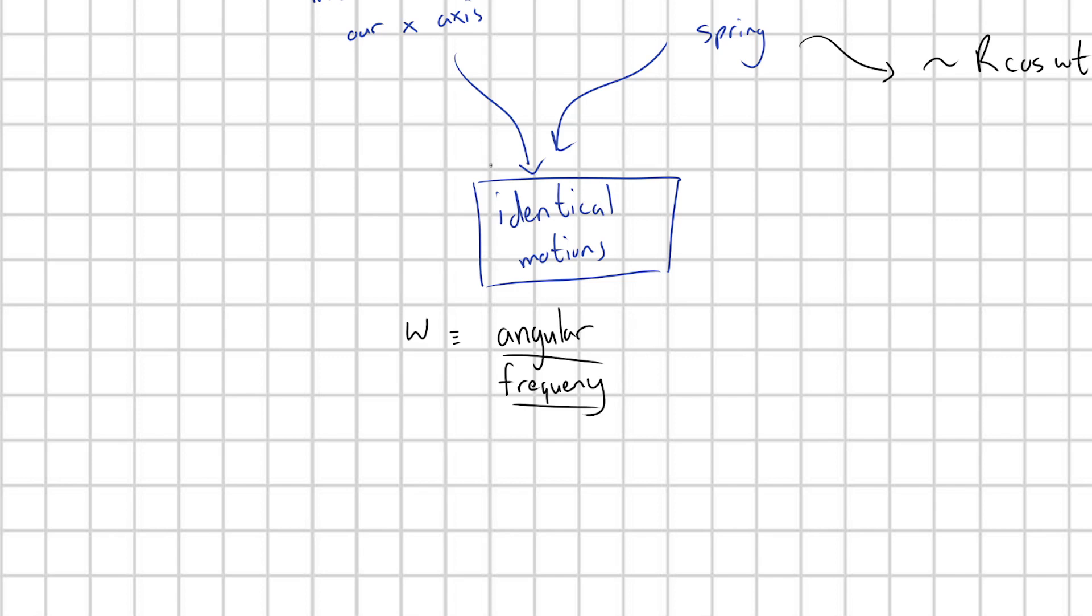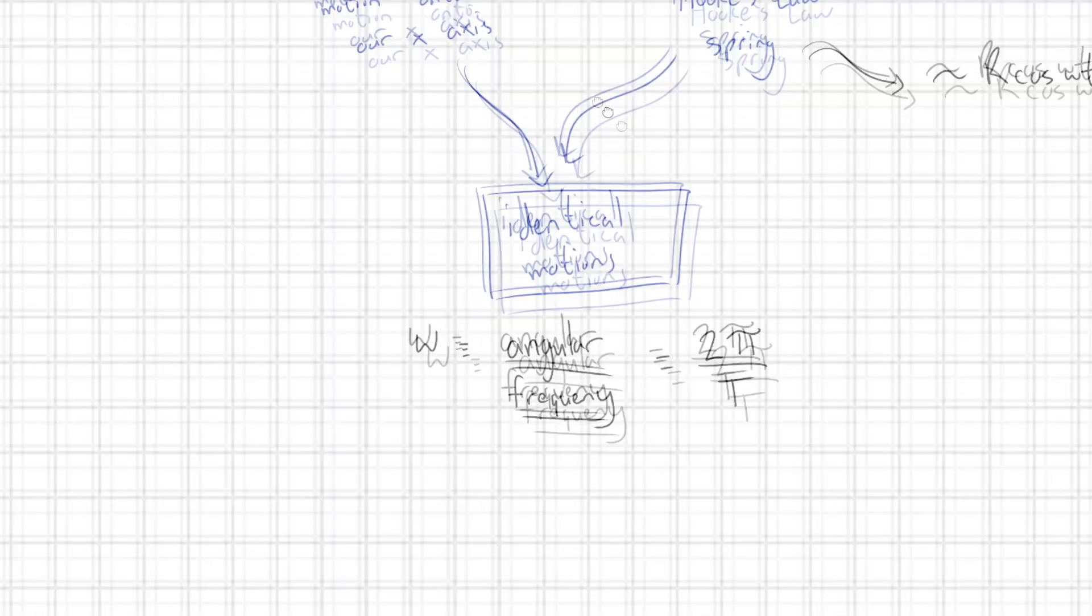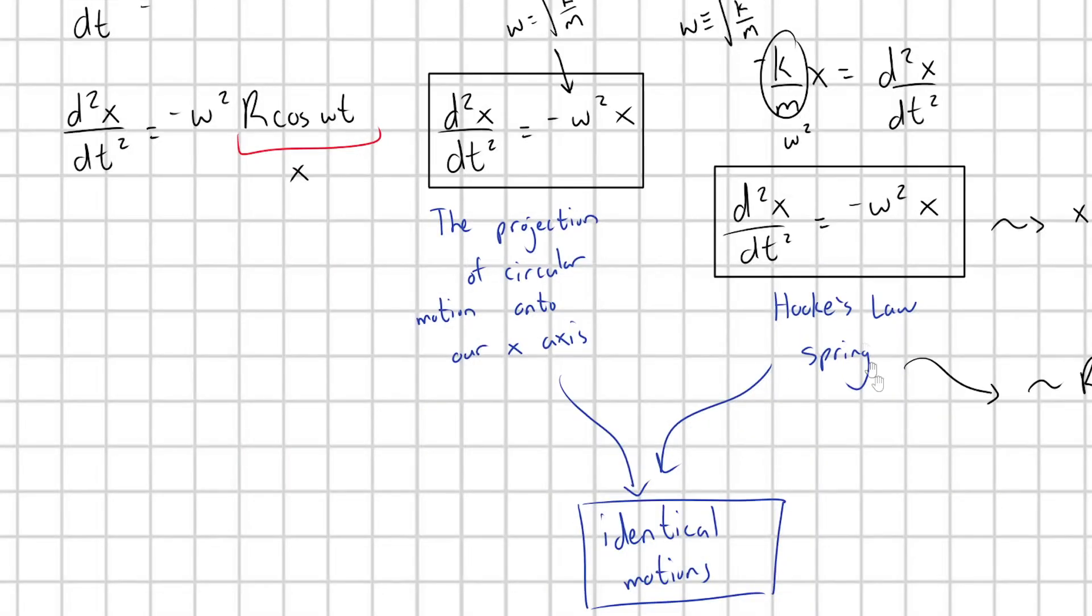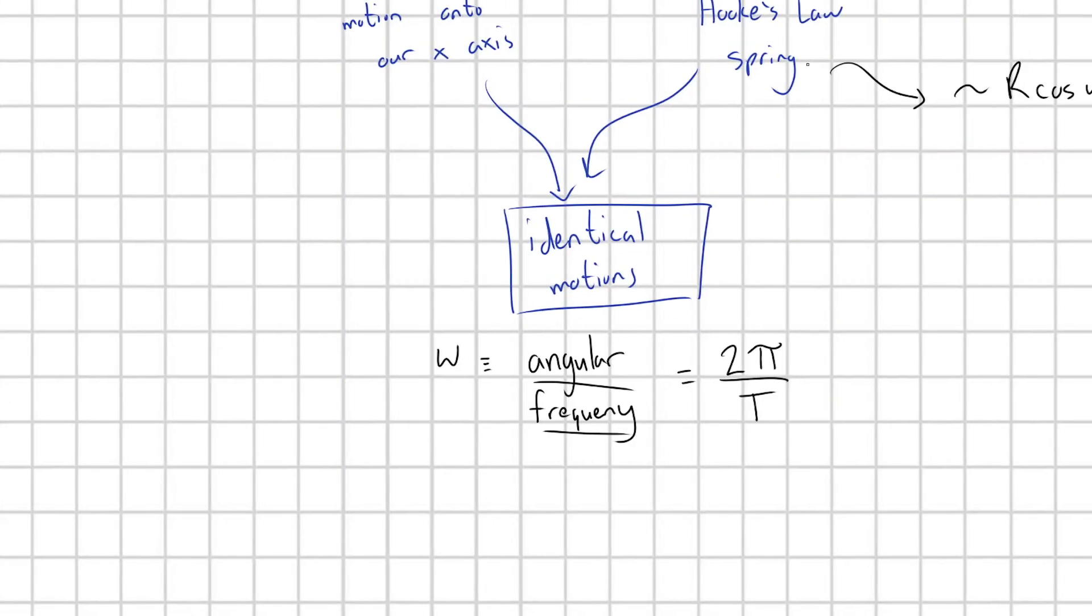But of course, this is going to be inherently related to the period of my oscillation. Remember, period is the amount of time it takes for me to get back to the same place in my motion. So this is going to be equal to 2 pi over my period t, just like it was for my circular motion before. Of course it is, because they have this one-to-one kind of correspondence with each other. So my angular frequency is also equal to 2 pi over the period of my spring's motions.